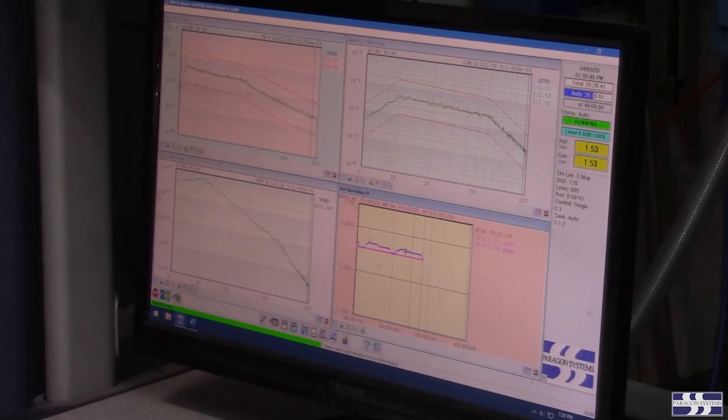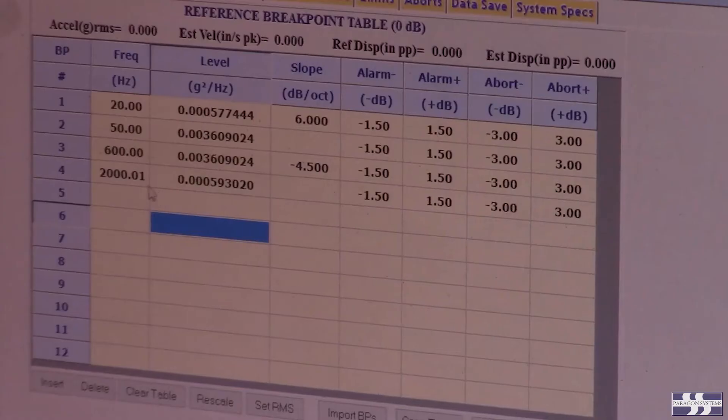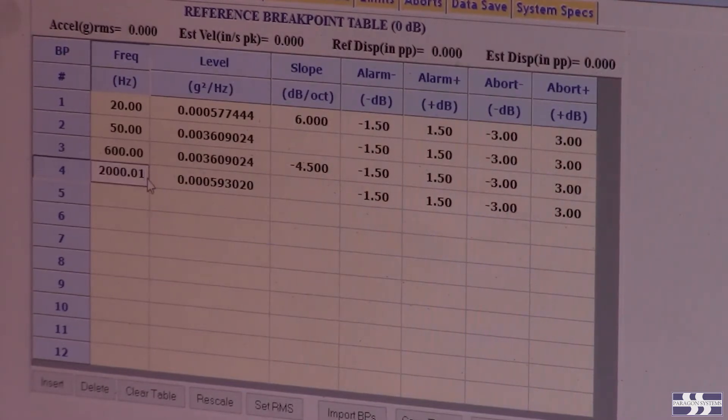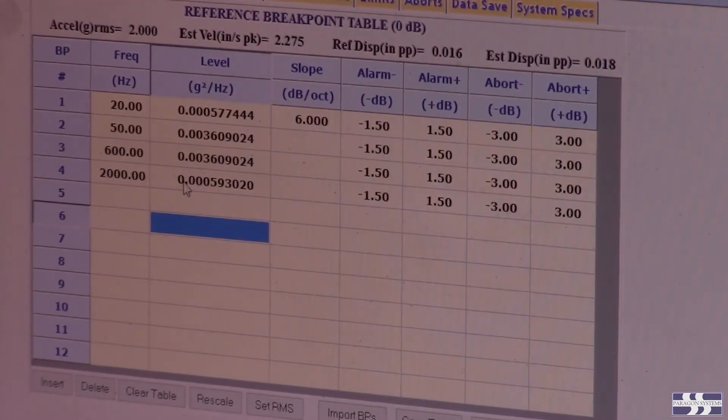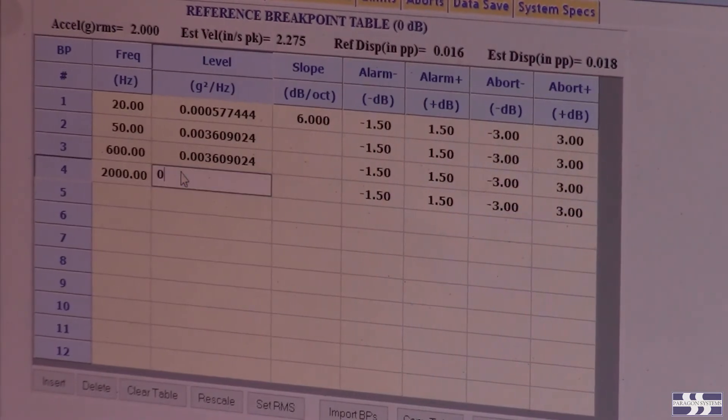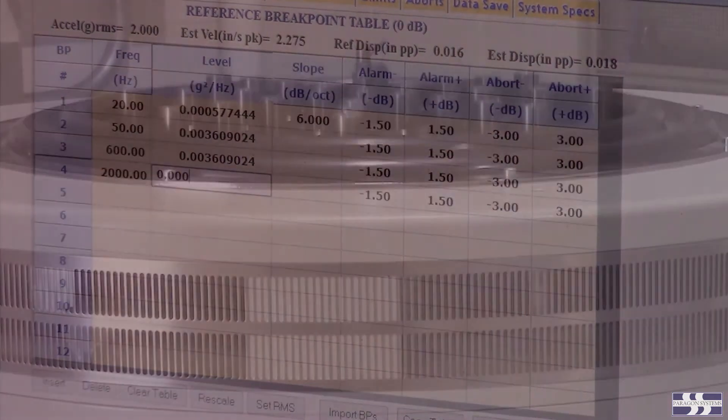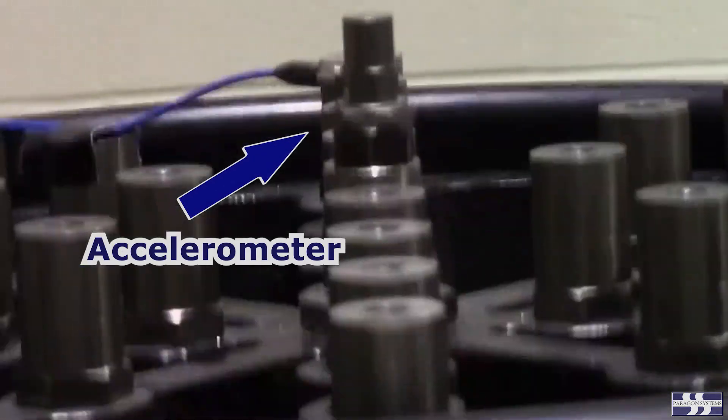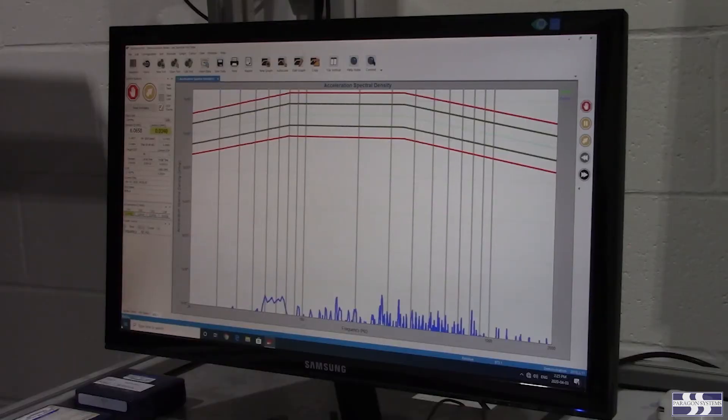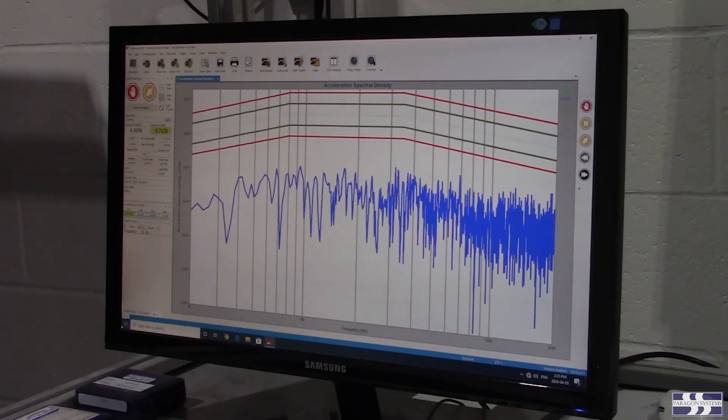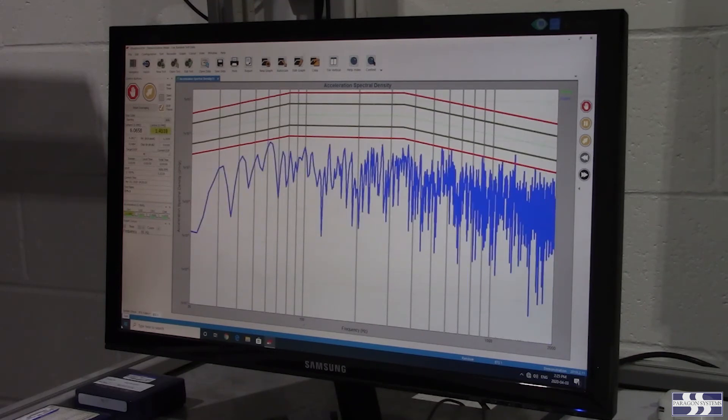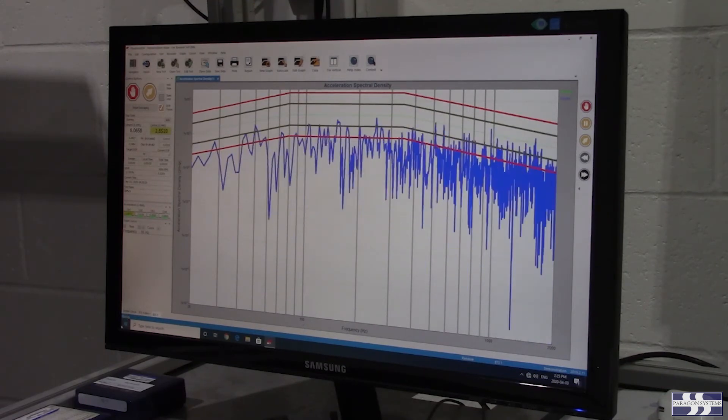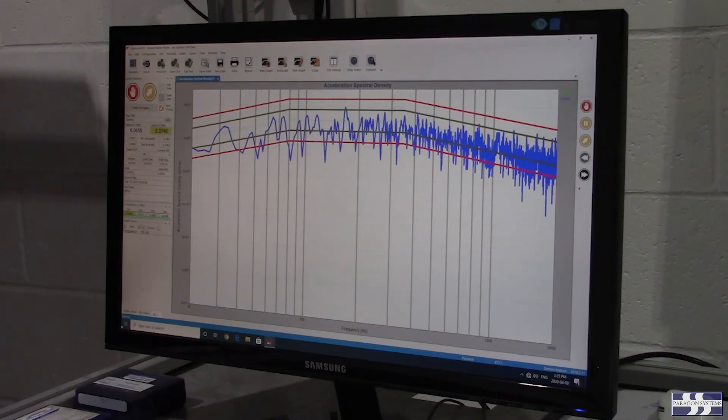The shaker amplifier input is provided by a vibration controller, which is programmed to produce specific acceleration, displacement, and frequency test profiles which match the vibration test method. An accelerometer sensor mounted to the armature measures its movements. The controller senses this accelerometer signal and adjusts the amplifier input so that the armature movement corresponds with the vibration test profile programmed into the controller.